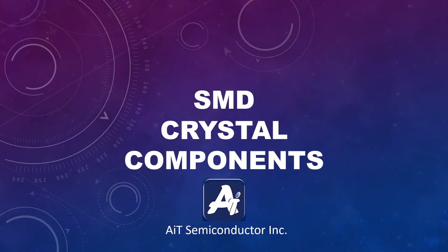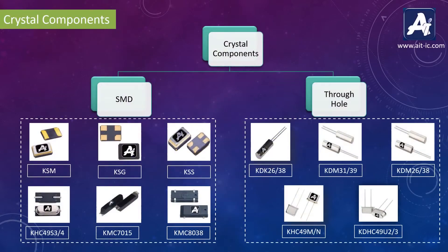In this video, I am going to explain about SMD crystal components offered by AIT Semiconductors. AIT offers various crystal components in SMD and through-hole packages. In SMD we have six different series of crystals, which include tuning fork and quartz crystal, and in through-hole we can see five different series of crystals. In this video we are going to see all the series of SMD crystals in detail.